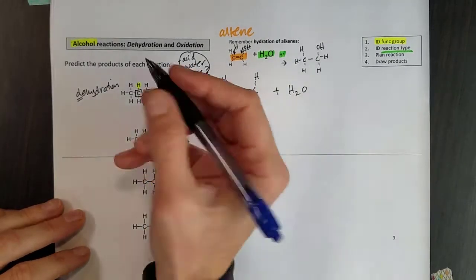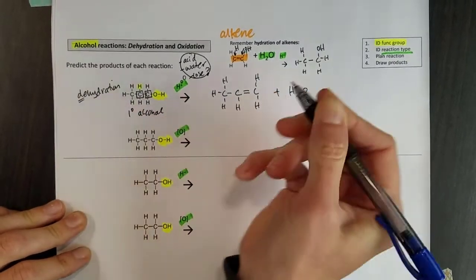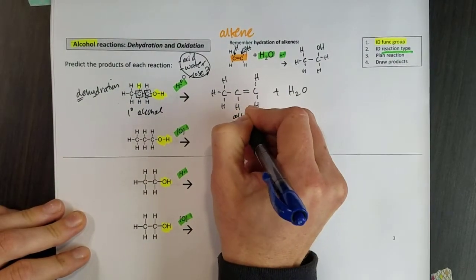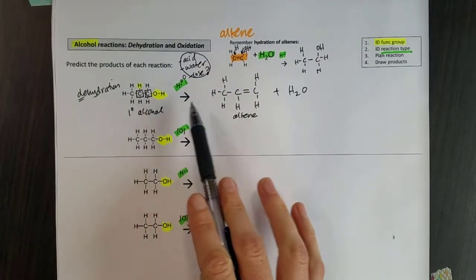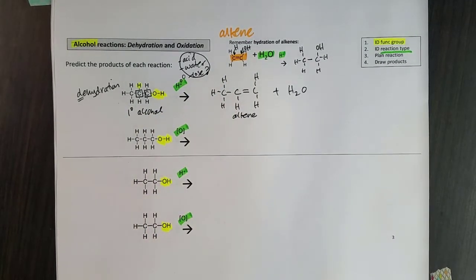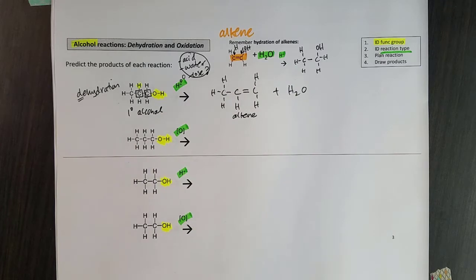So that's dehydration. Notice here in terms of functional groups, this was a primary alcohol and it turned into an alkene. So that's going to be our trend that alcohols dehydrate and become alkenes, and don't forget that water. Even I forget it sometimes. Makes sense, right? We dehydrated and water is one of our products.